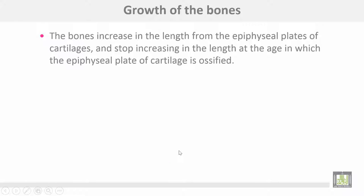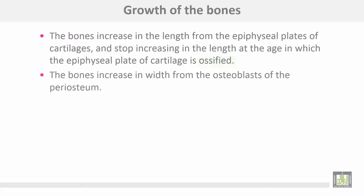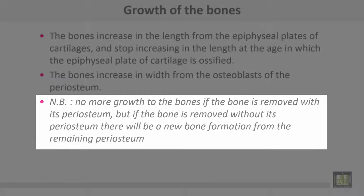Growth of the bones: bones increase in length from the epiphyseal plates of cartilage, and stop increasing in length at the age at which the epiphyseal plate of cartilage is ossified. The bone increases in width from the osteoblasts of the periosteum. There is no more growth to the bone if the bone is removed with its periosteum. But if the bone is removed without its periosteum, there will be new bone formation from the remaining periosteum.